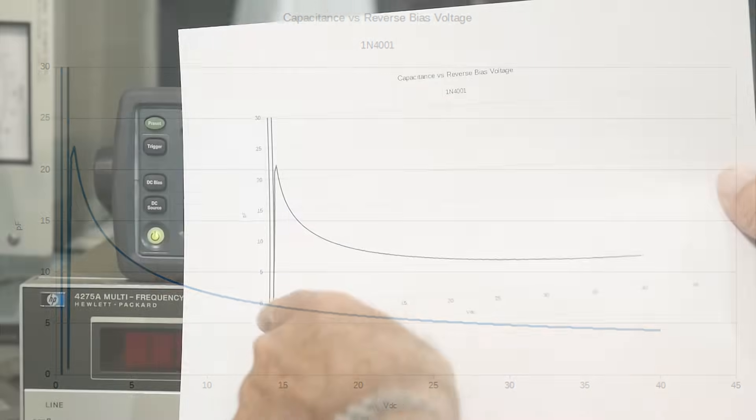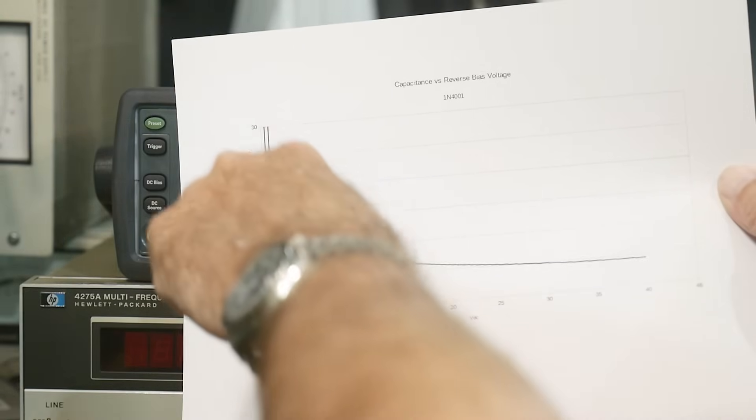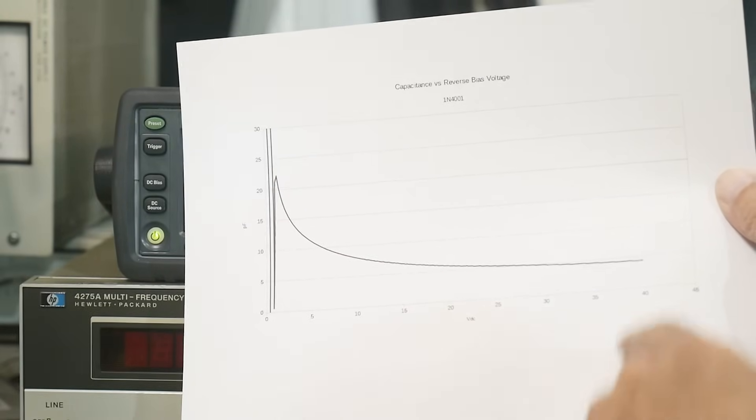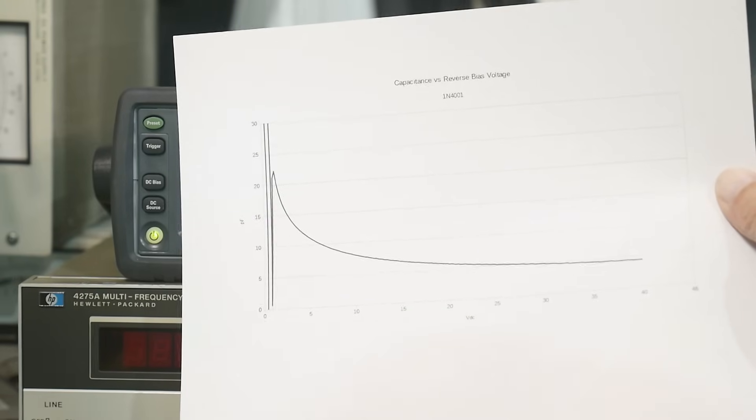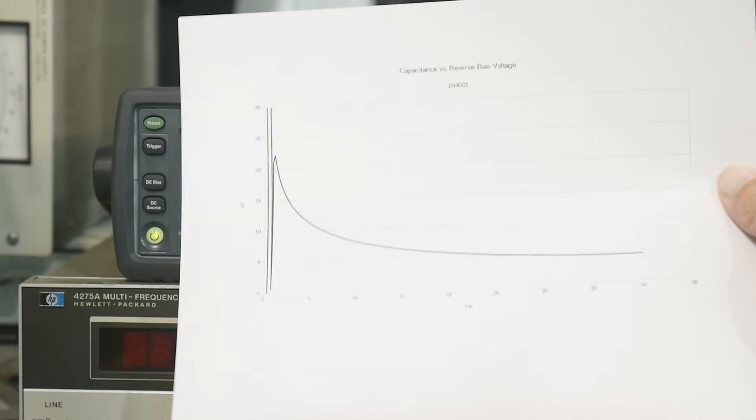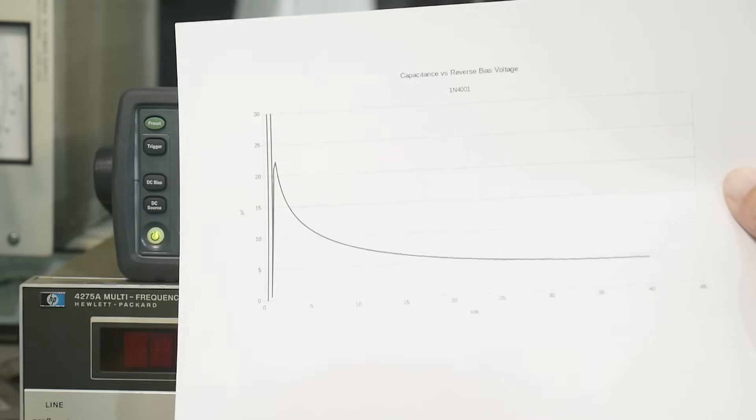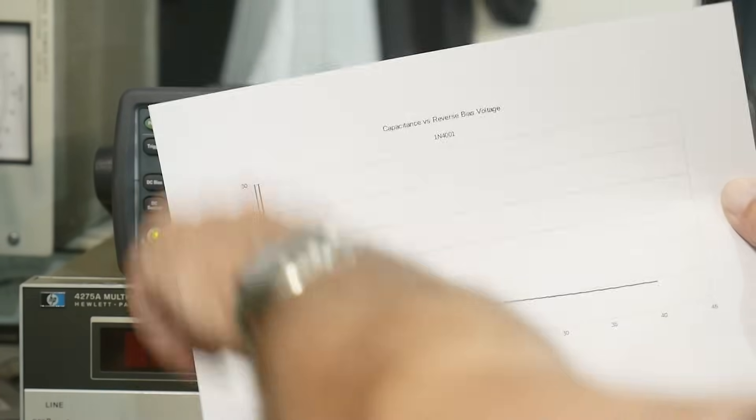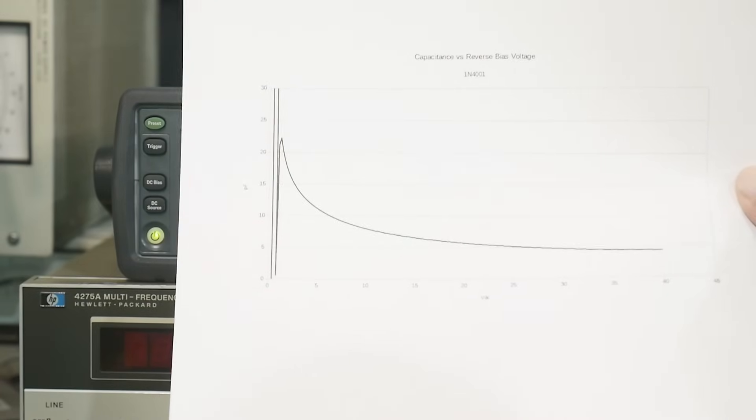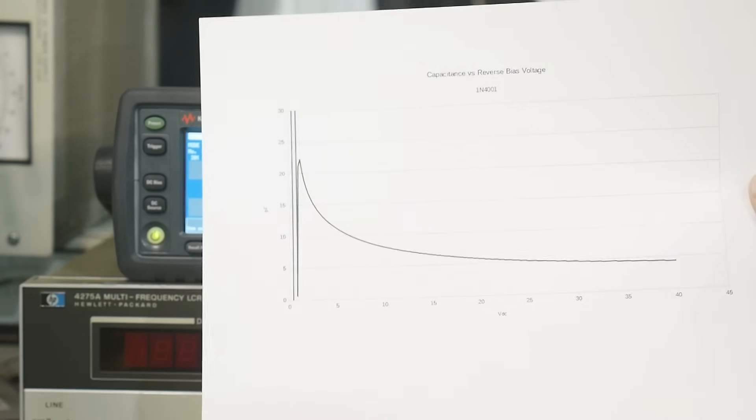And then as you go from 1 volt to 40 volts, the picofarads drops to something like 4 picofarads. That goes from 22 to 4. And it's in a non-linear fashion. And I'm sure there's a bunch of math behind the shape of that curve and everything, which I don't know what it is. But anyway, there you go.